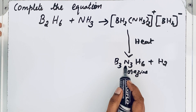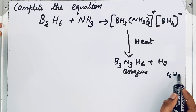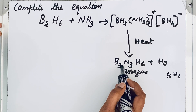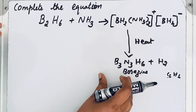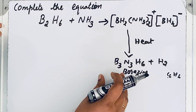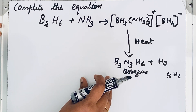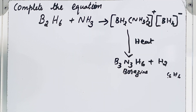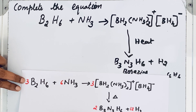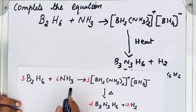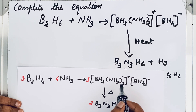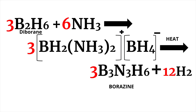This product is called borazine, and it looks similar to benzene. Benzene is C₆H₆, while borazine has H₆ with B₃N₃ — three atoms of boron and three atoms of nitrogen alternating, just like benzene's ring. Because of this alternating B–H and N–H bond structure resembling benzene, borazine is called inorganic benzene. The balanced equation is: 3B₂H₆ + 6NH₃ → [BH₂(NH₃)₂]⁺[BH₄]⁻ (intermediate), which on heating gives borazine (B₃N₃H₆) and hydrogen. Thanks for watching.